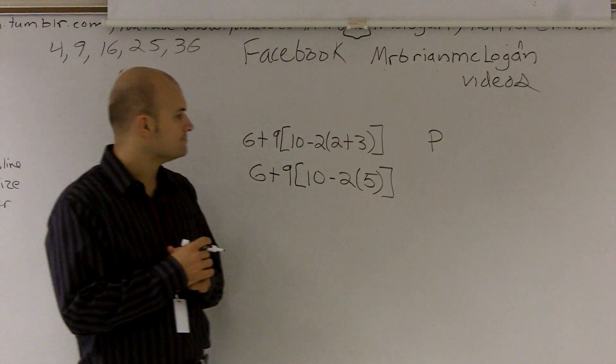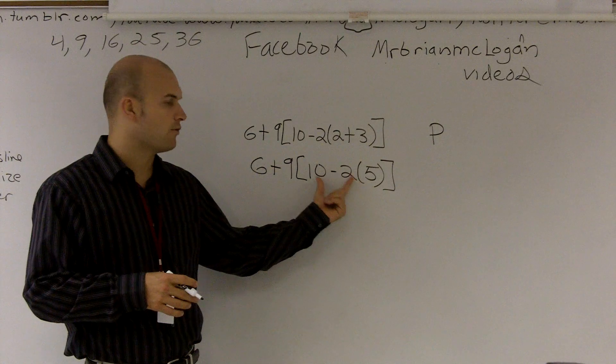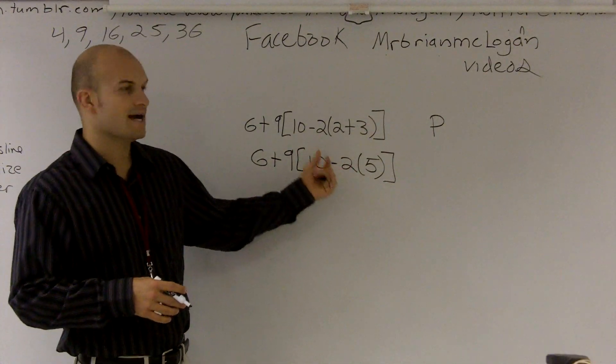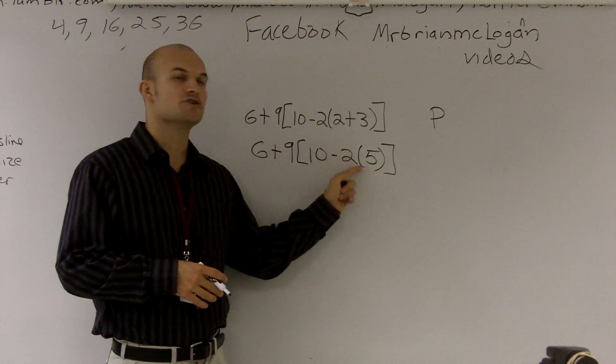So then the next thing I need to look at is say, all right, well, what's going on in here? Well, inside of my parentheses, I have 10 minus 2 times 5.